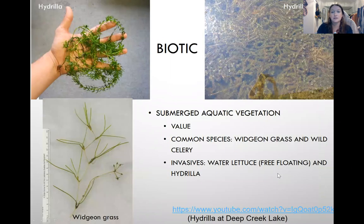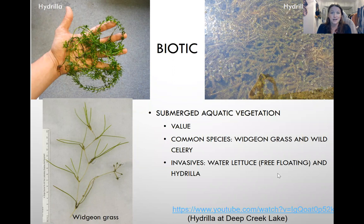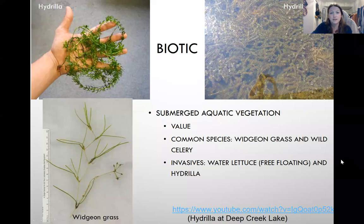For submerged aquatic vegetation — plants underneath the water — the top two pictures are hydrilla. On the left is a close-up and on the right is what you'd see in shallower areas like the Patuxent River, with huge mats of hydrilla that can be bad for boat propellers and can suffocate other plants by blocking sunlight. Temperatures can get really warm in mats of hydrilla, which means lower oxygen. The bottom-left species is our native widgeon grass — not invasive. Submerged aquatic vegetation overall serves as nurseries for small fish, increases oxygen in the water, and helps filter the water.